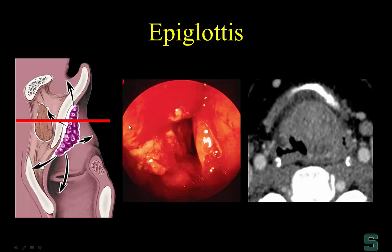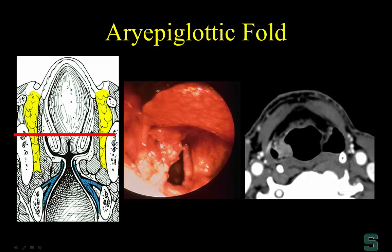The epiglottis is an anterior and midline structure, as seen on illustration. Here's a schematic of an epiglottic carcinoma — because the epiglottis is anterior and midline, this carcinoma seen at endoscopy is anterior. Radiologically, we identify it the same way — anterior and midline. The aryepiglottic fold is a pyramidal structure running from the arytenoid cartilage to the lateral epiglottis. Here's an endoscopic view and the corresponding CT showing a polypoid carcinoma involving the right aryepiglottic fold.